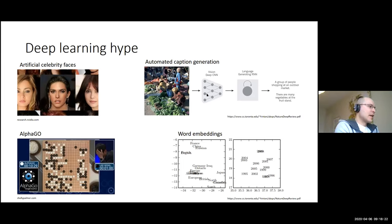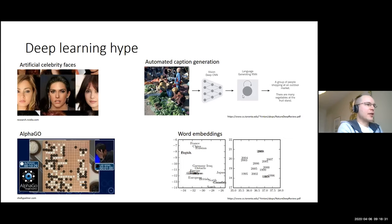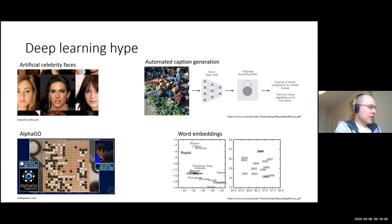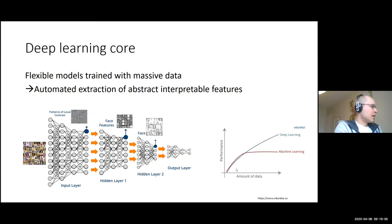Other examples include automated caption generation — given an image, a trained model can produce a corresponding caption, such as 'people shopping at an outdoor market.' Word embeddings in natural language processing can automatically capture relationships between different types of words in text. The idea in deep learning is a flexible model with multiple layers, starting with simple input features and learning progressively more complex ones.